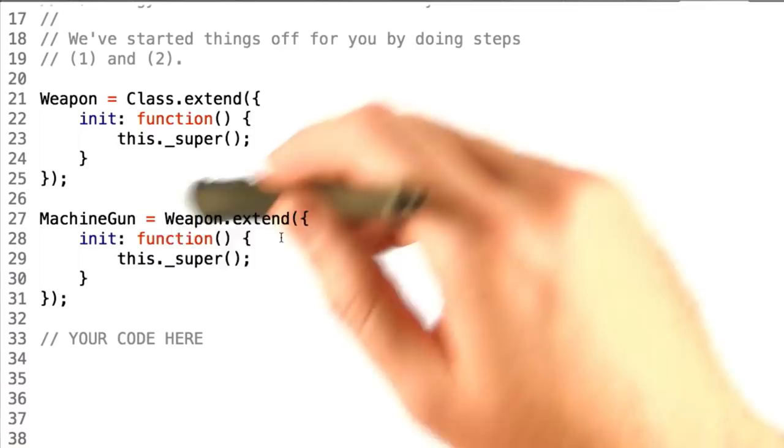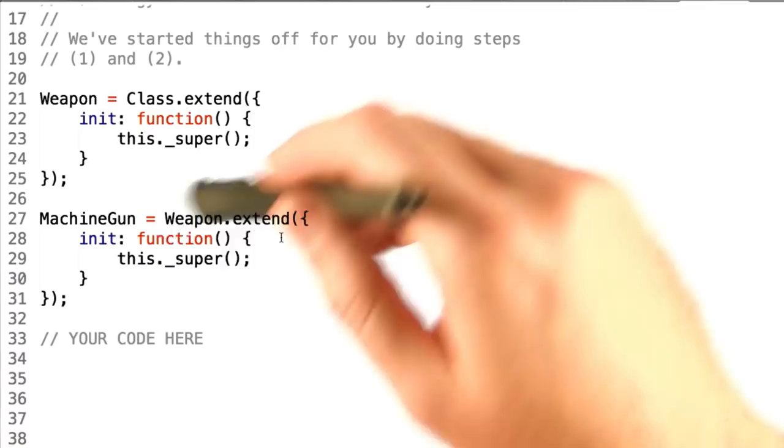Similarly, machine gun is set to weapon.extend, which extends all of weapon's functionality and then builds on top of that.